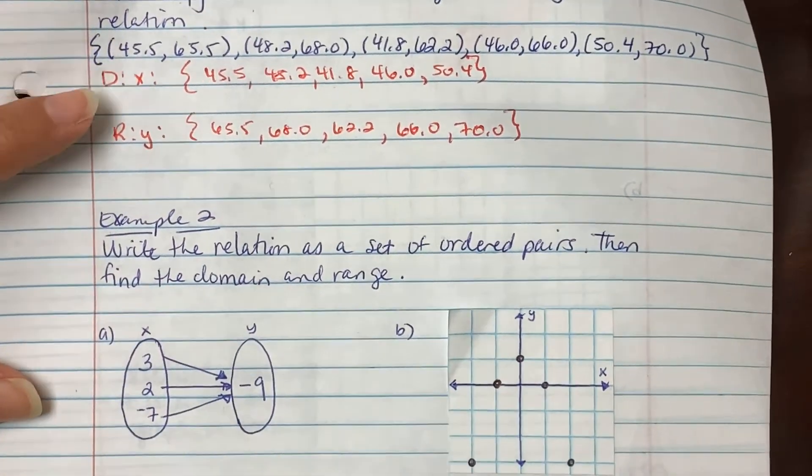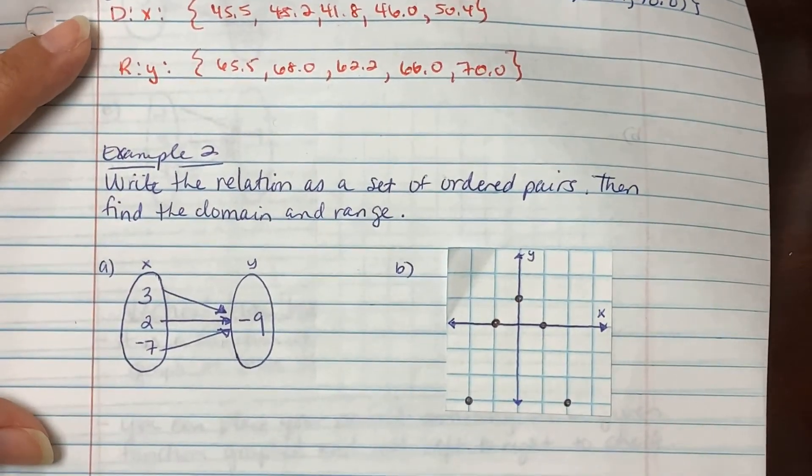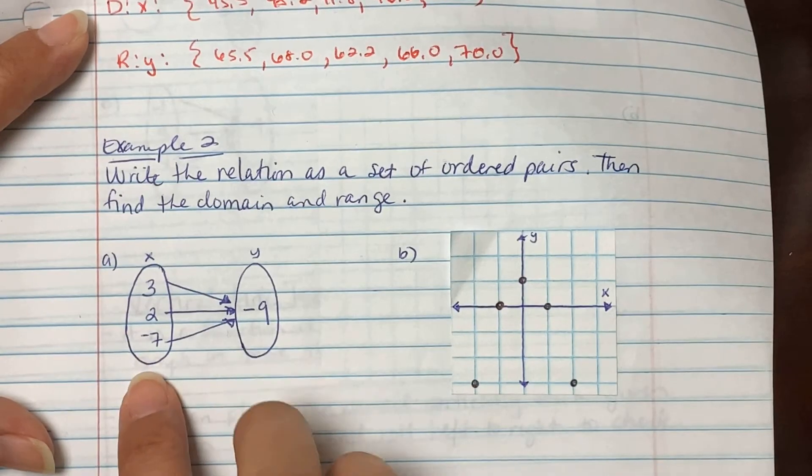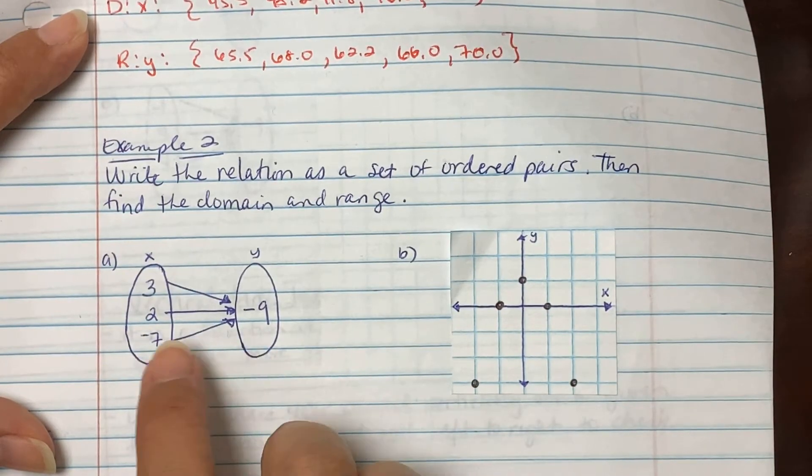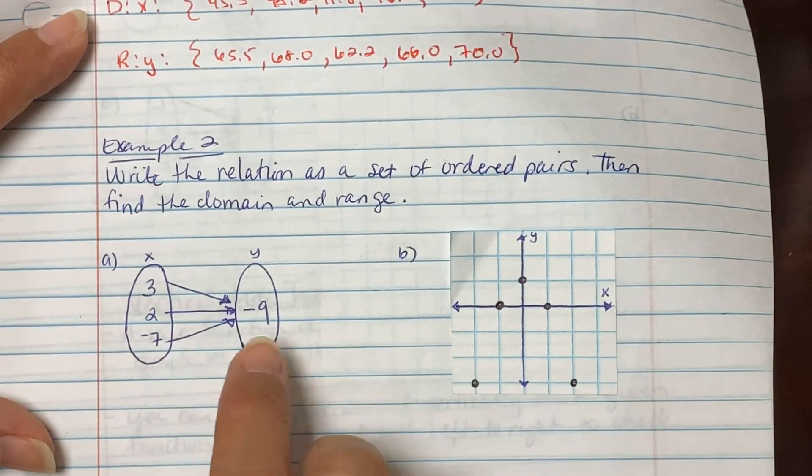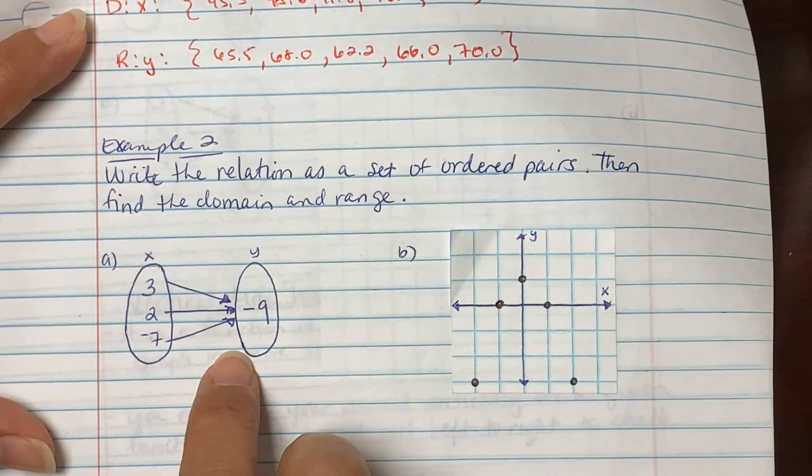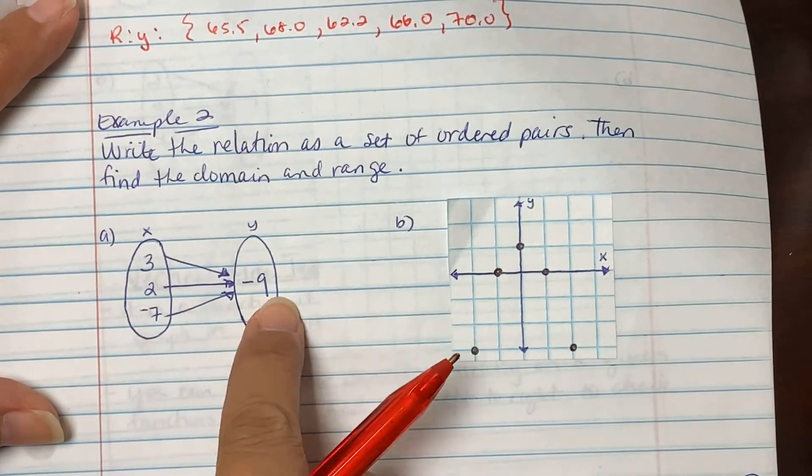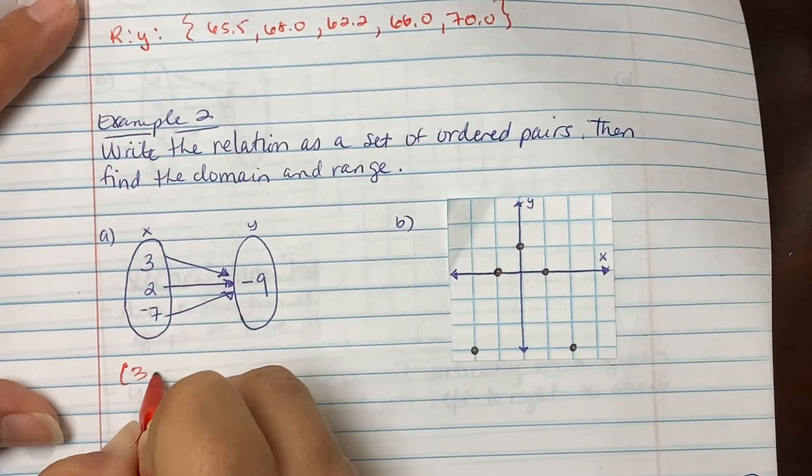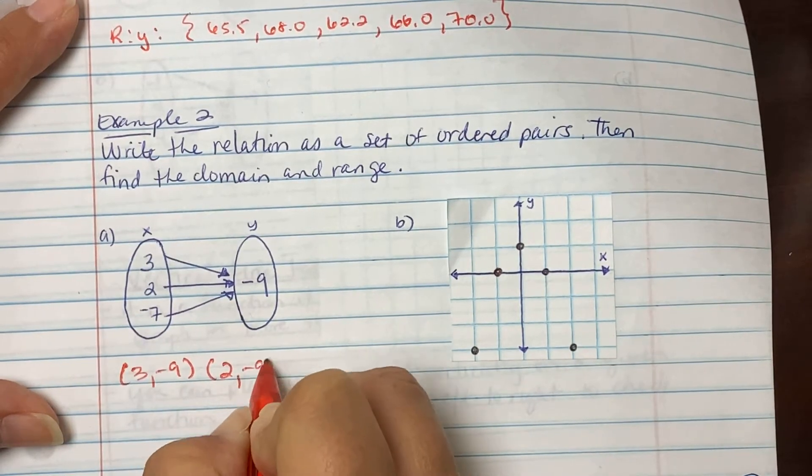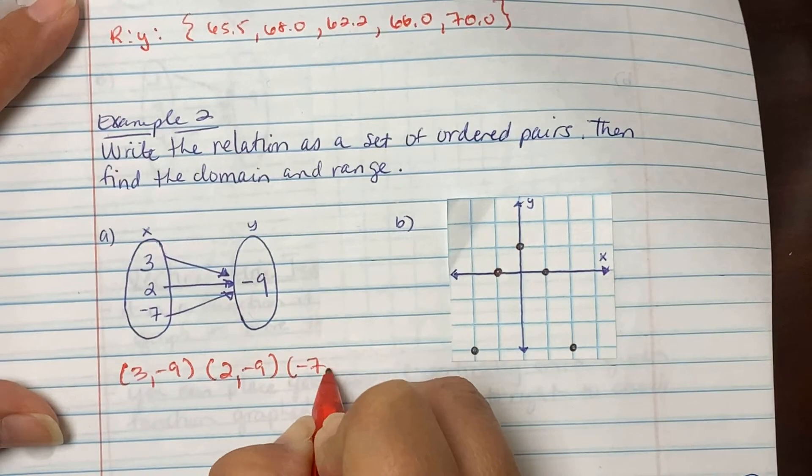Example two says write the relation as a set of ordered pairs, then find the domain and range. Here we have an input-output value. The x's are being inputted and they're exporting a y. So you're going to write ordered pairs between them. The 3 went to the negative 9, so I have an ordered pair of (3, -9), an ordered pair of (2, -9), and an ordered pair of (-7, -9).